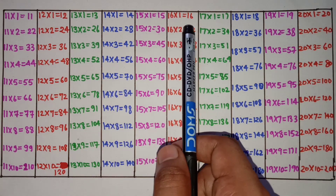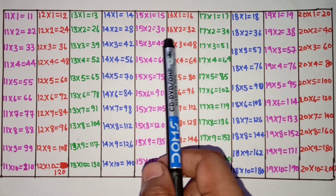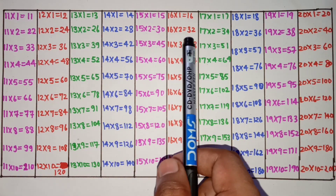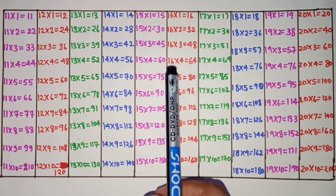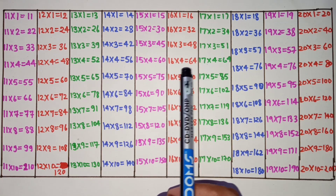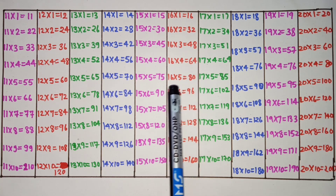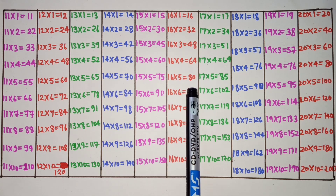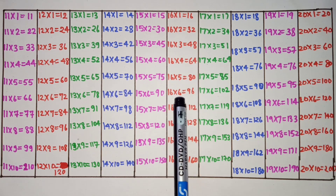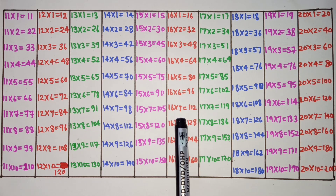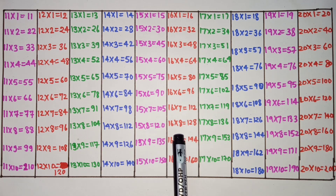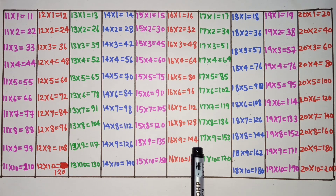16 ones are 16, 16 twos are 36, 16 threes are 48, 16 fours are 64, 16 fives are 80, 16 sixes are 96, 16 sevens are 112, 16 eights are 128, 16 nines are 144.